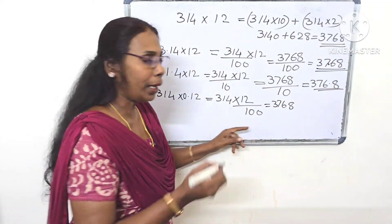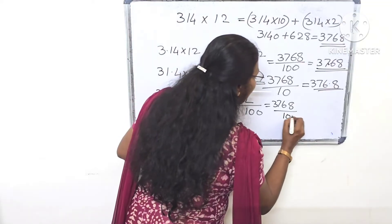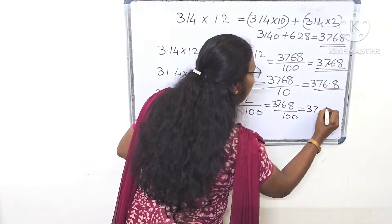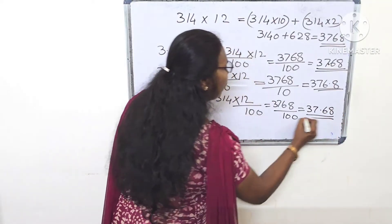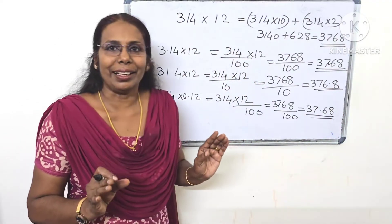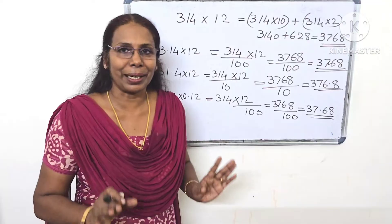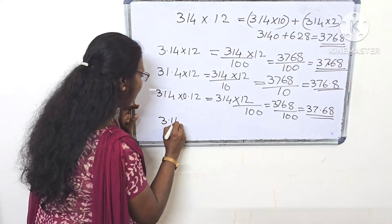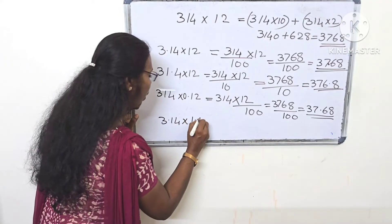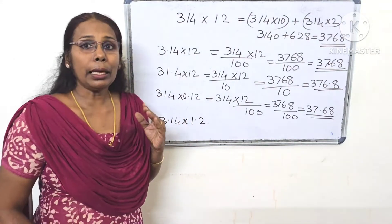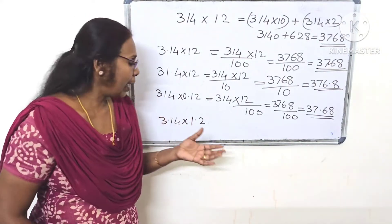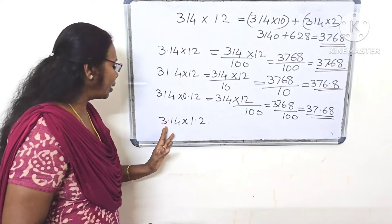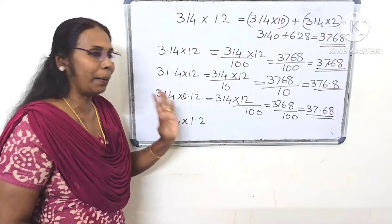By 100, we are going to do 100. We are going to do 37.68. Now we have to do a calculation of a minus. That's it — 3.14 GUNIKKANAM 1 point is 2. I'll give you a change of the DASHAMSHU STAAN.